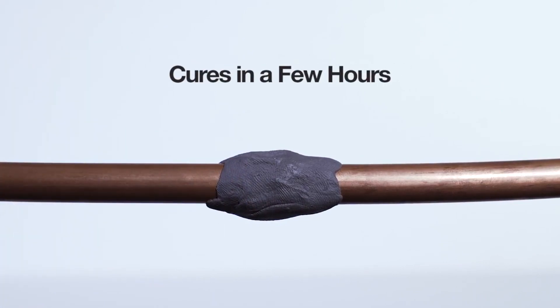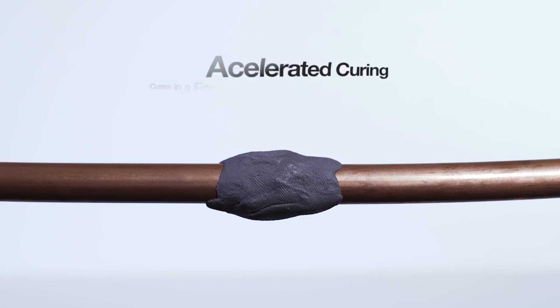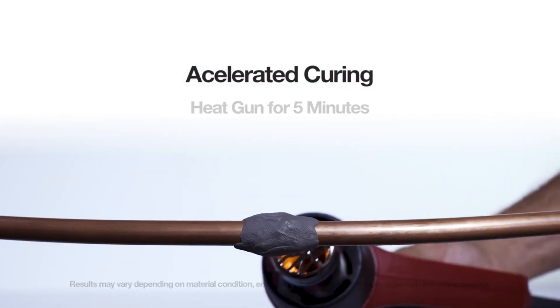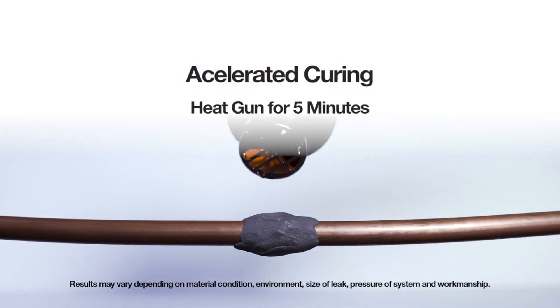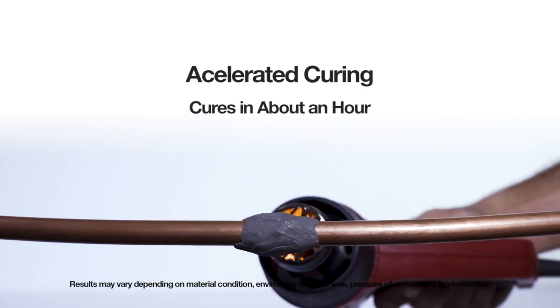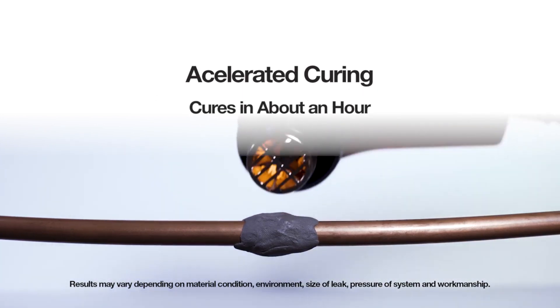External will cure once it's on in a few hours. To accelerate the curing, use your heat gun over the external for five minutes and then wait for about an hour and test. It's as easy as that.